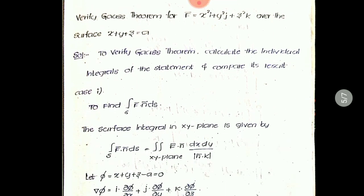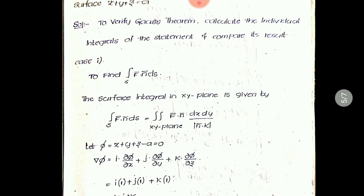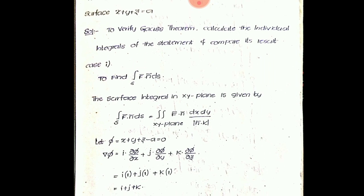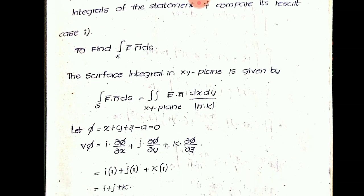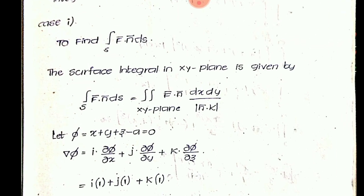A verification problem: verify Gauss theorem for a vector point function over the surface X + Y + Z = A. This is somewhat lengthy because the left side is a double integral and the right side is a triple integral. For the left-side integral, recall that a plane is required. Take the XY plane; the surface integral is calculated as integral of F̄·N̄ dX dY divided by |N̄·k̂|.